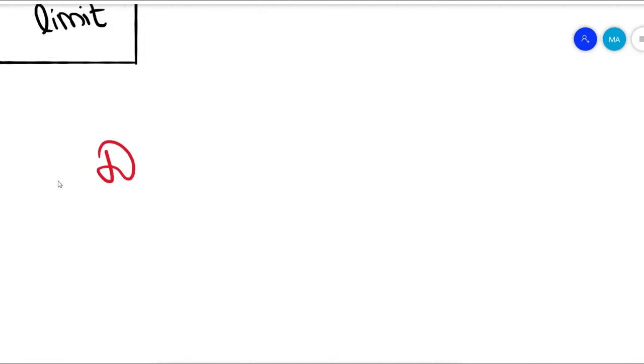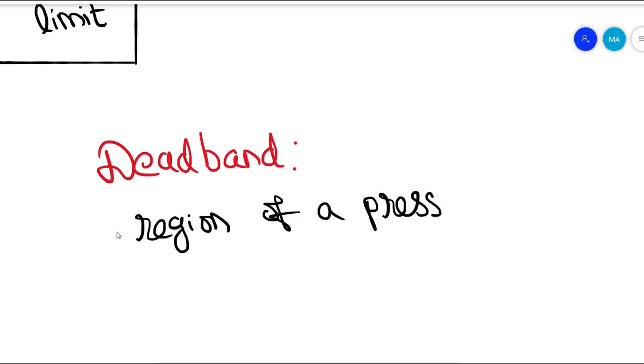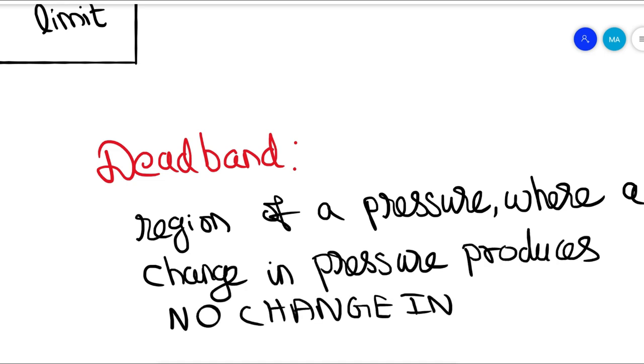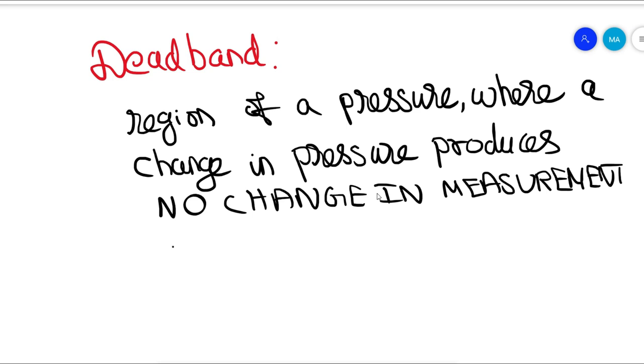A deadband is a region of pressure where a change in pressure produces no change in measurement output or control signal. Don't confuse. If you don't understand this definition, let me explain you with an example.